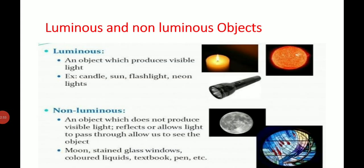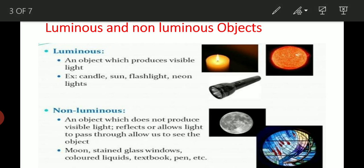Now we are going to study luminous and non-luminous objects. A luminous object is an object which produces its own visible light. A non-luminous object is an object which does not produce its own visible light — it only reflects or allows light to pass through it so we can see it.